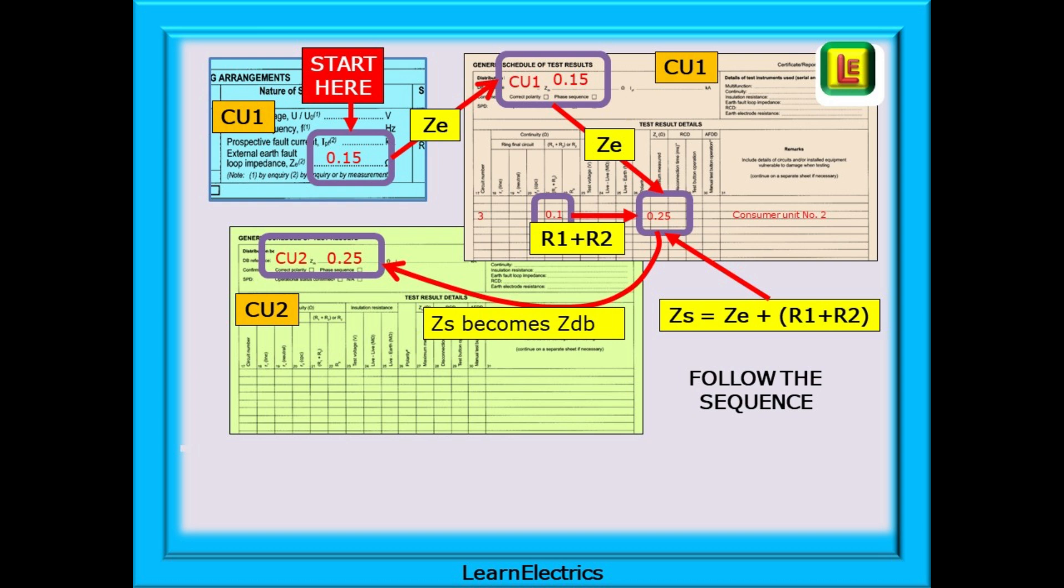This is the sequence that you should follow. Starting with the EICR or EIC for consumer unit 1 at the top left, enter the measured ZE at the main switch for CU1, 0.15 ohms in this case. This can then be written on the schedule of test results for CU1 as 0.15 for ZDB. It's only a name.